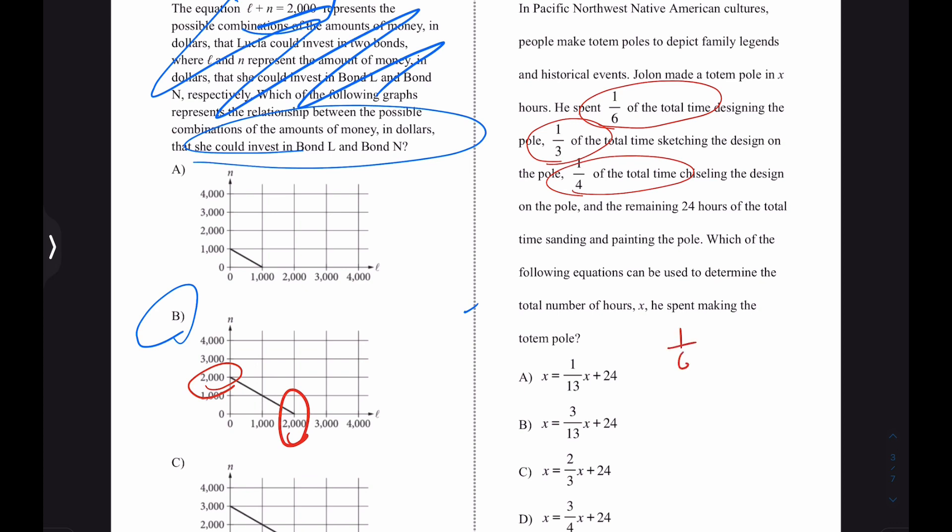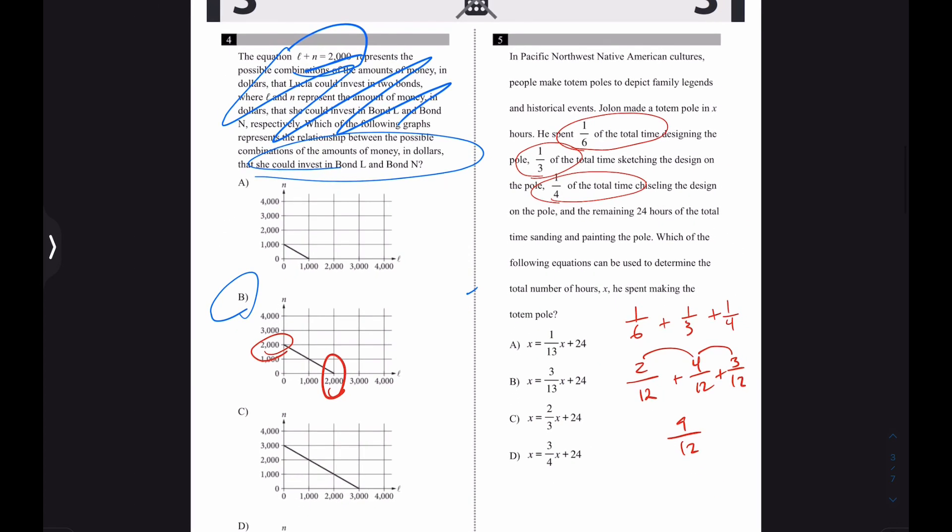Which of the following could be used to determine the amount of hours he spent making the totem pole? Well, one-sixth plus one-third plus one-fourth. How much is that? I guess I can take them all to 12. So I have 2 over 12 plus 4 over 12 plus 3 over 12. And at the end of the day, 3 plus 4 is 7, 7 plus 2 is 9, 9 over 12. So he spent 9 over 12, really three-fourths of the time doing everything but making it.